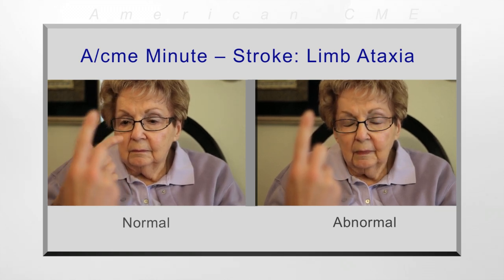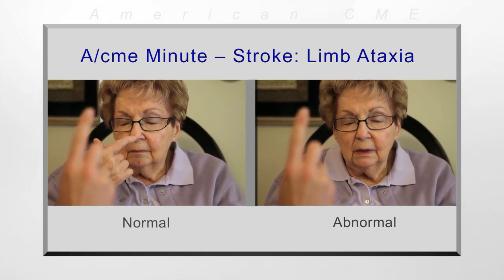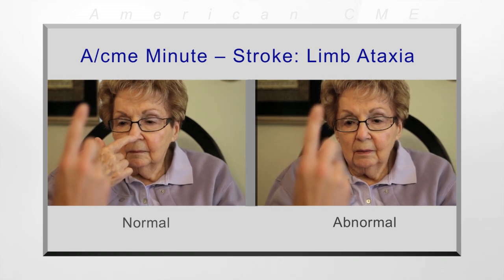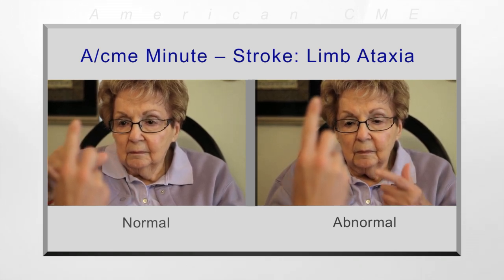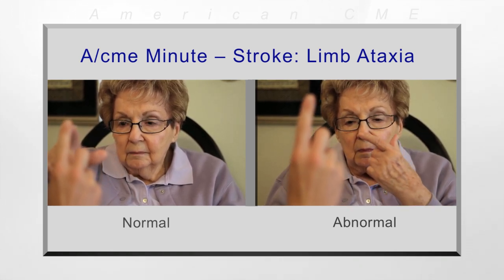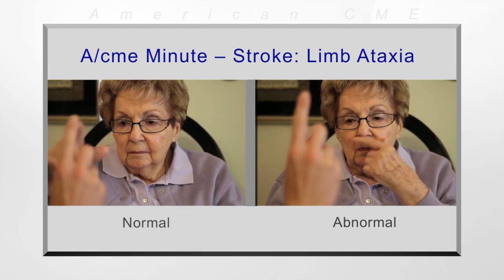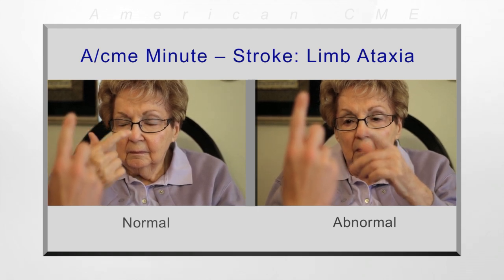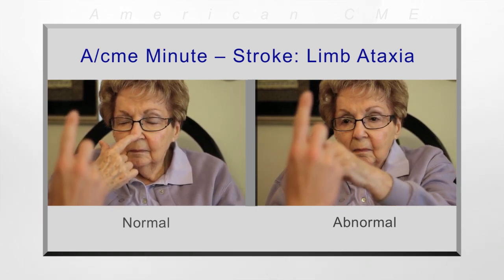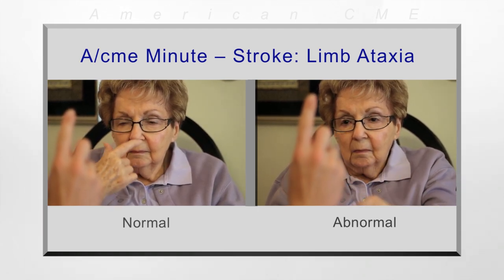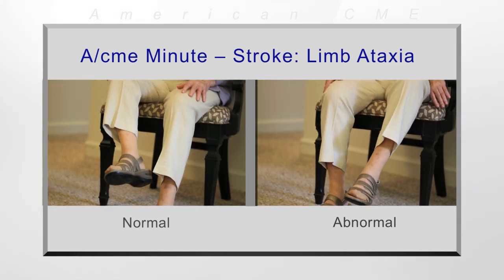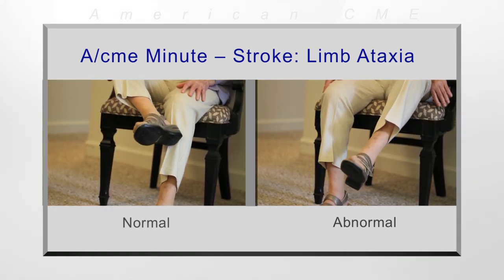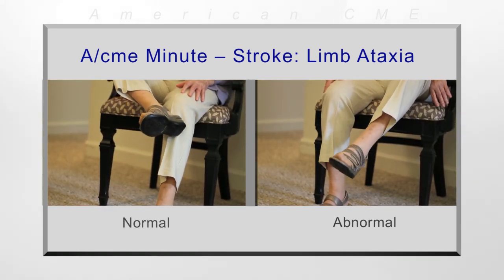Holding your index finger at arm's length from the patient, ask them to touch their nose and then reach out to touch your finger. A healthy patient will likely be able to perform this task without any difficulty. A patient suffering from a cerebellar stroke, however, may struggle with spatial orientation.